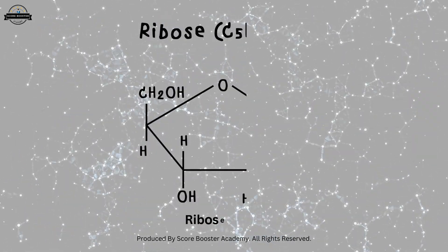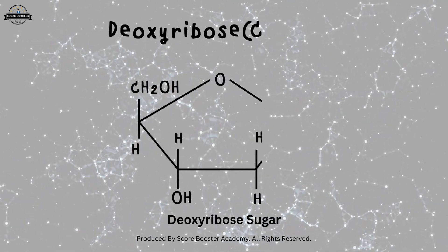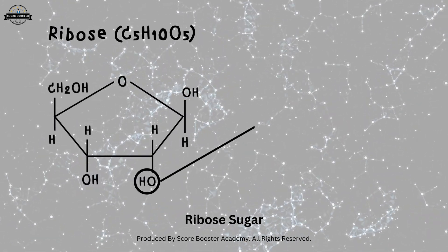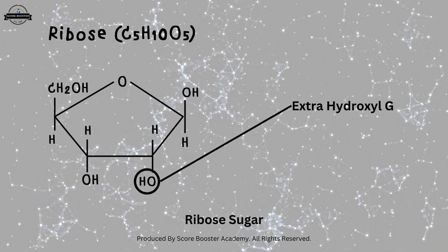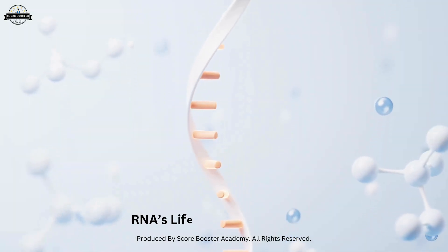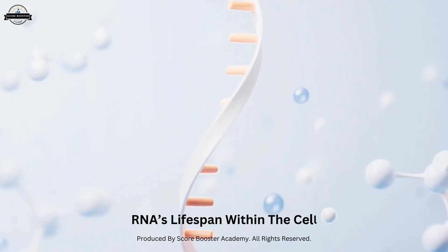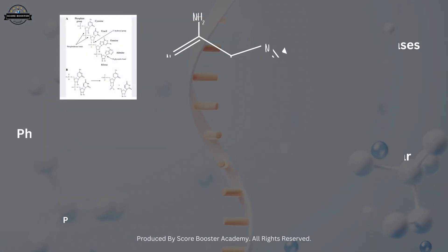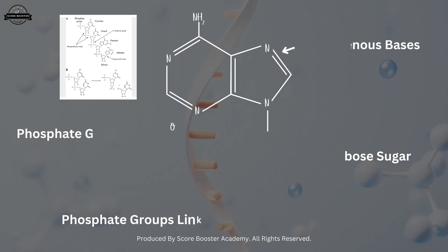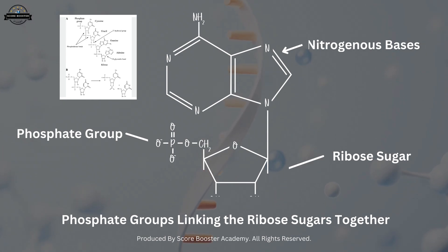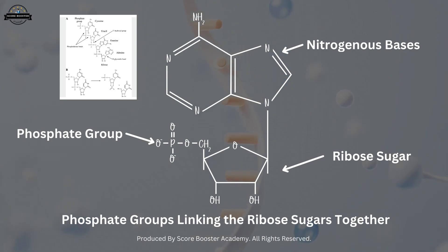RNA is built with ribose sugar, unlike DNA, which contains deoxyribose sugar. The presence of an extra hydroxyl group on the ribose sugar makes RNA more reactive. This extra group also makes RNA less stable than DNA. This structural difference is crucial for RNA's function and lifespan within the cell. The phosphate groups link the ribose sugars together, forming the backbone of the RNA strand. Each phosphate group connects to the 3' carbon of one ribose and the 5' carbon of the next, creating a continuous repeating structure.